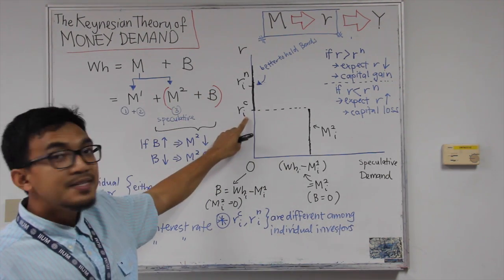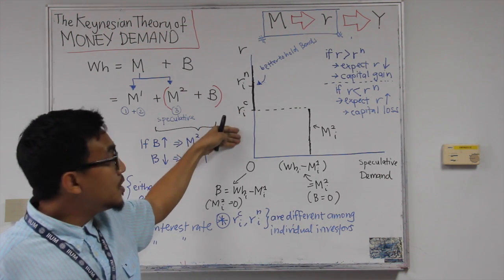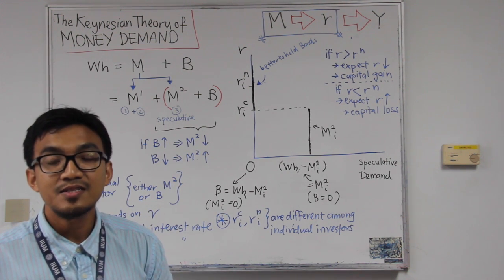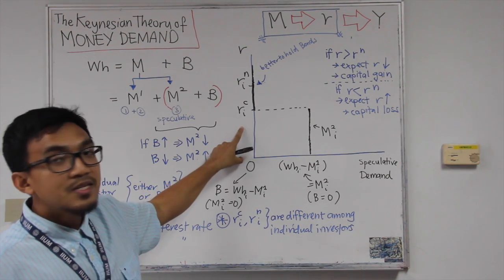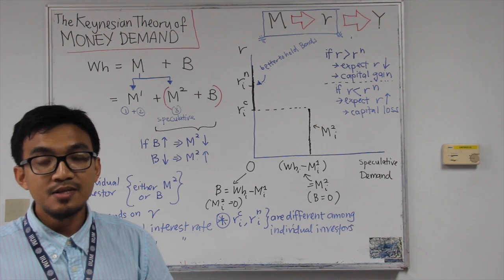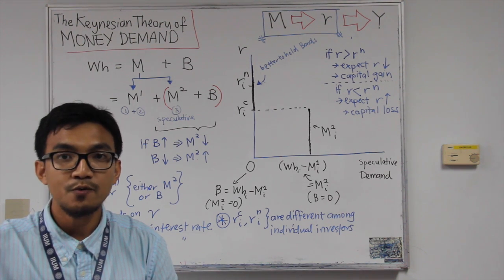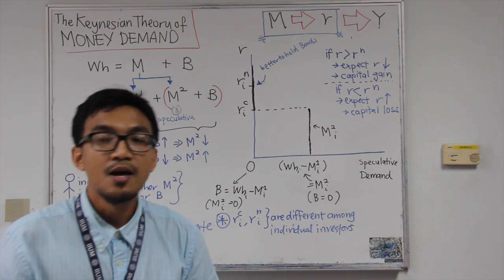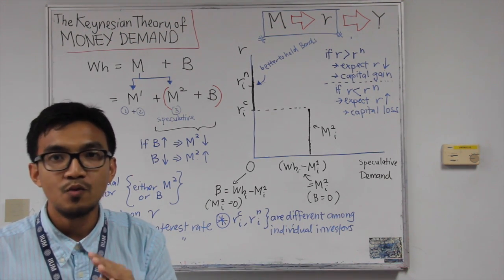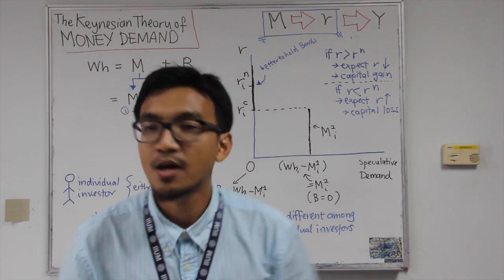Unless the interest rate is too low — lower than the critical interest rate — below RC, the capital loss is much bigger than the interest rate return. In that case, it's no longer profitable to hold bonds, so we would rather hold money for speculative reason — just to wait for the right chance to buy bonds in the future. Since it is not profitable to buy bonds, we liquidate them and hold money, waiting for the right chance to buy bonds back in the future.